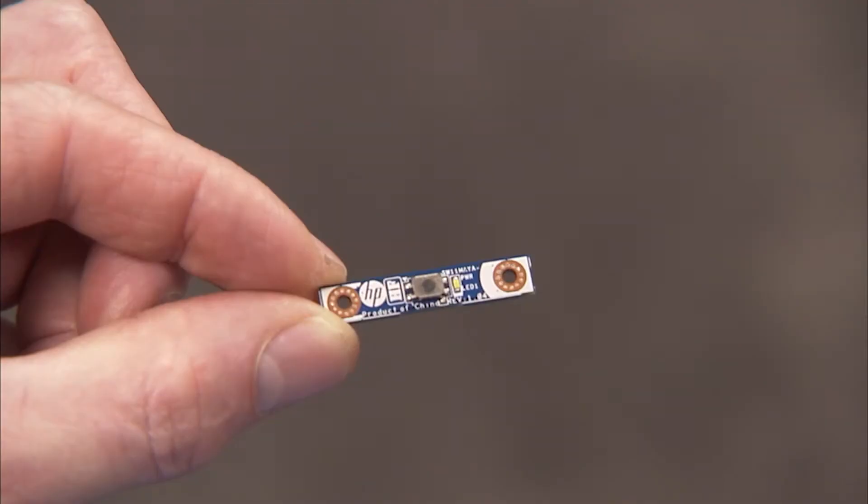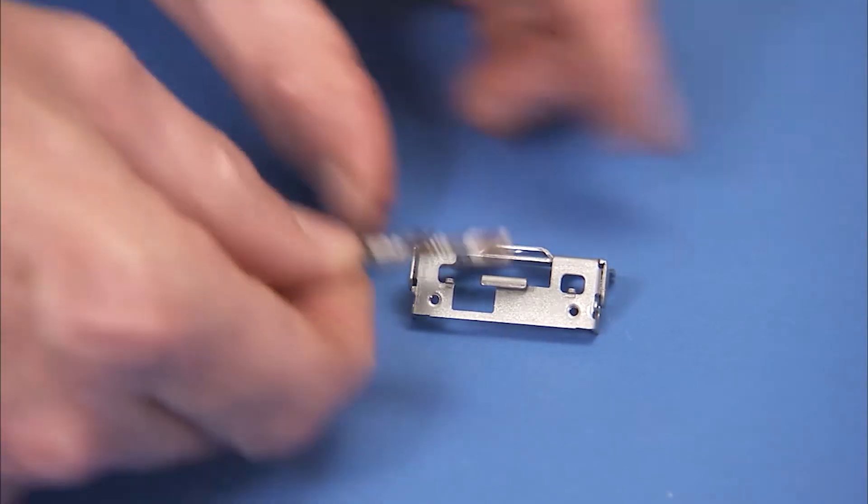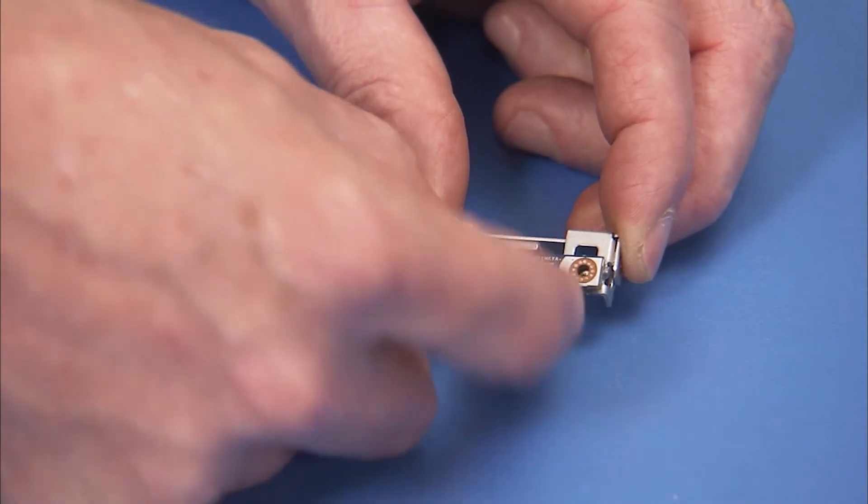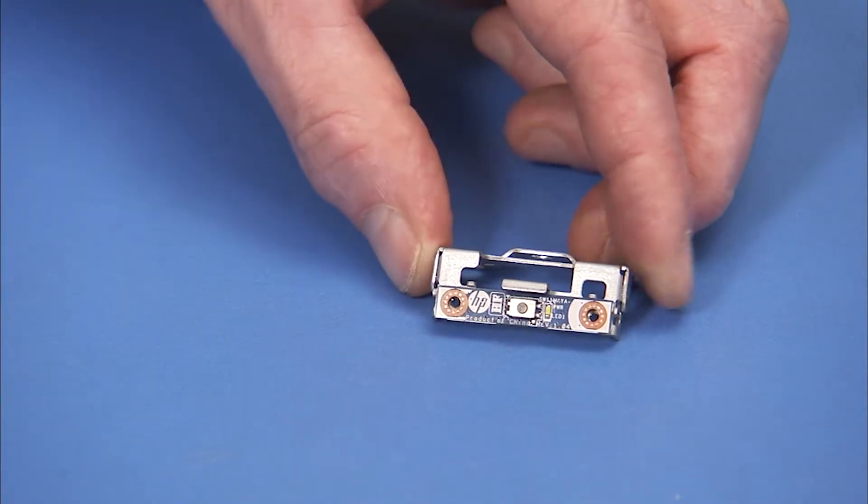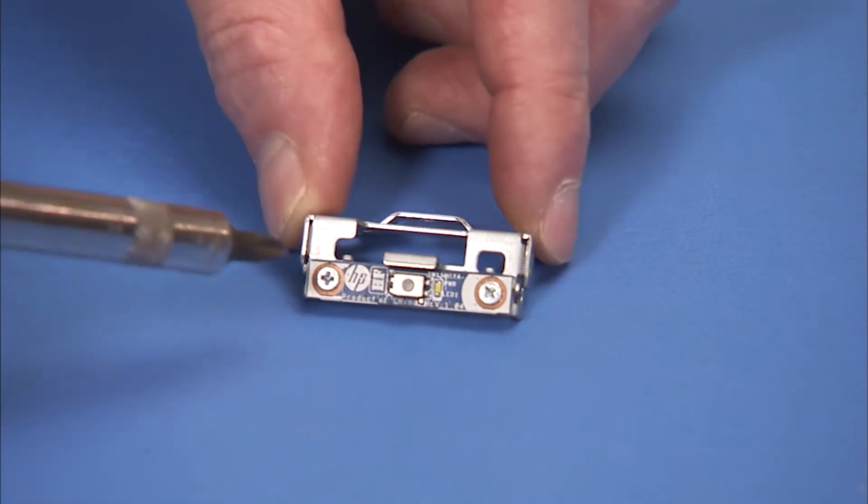To replace the power button board, place the board onto its bracket and secure with two Phillips number one screws.